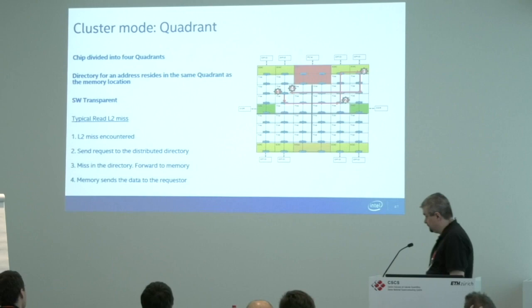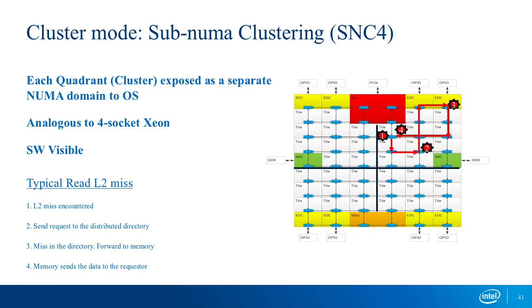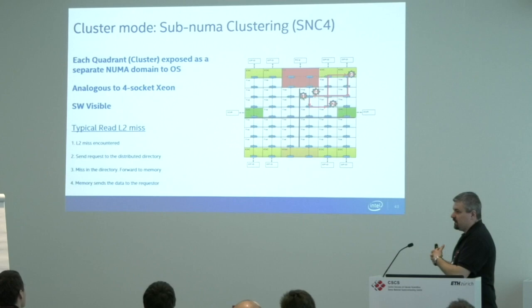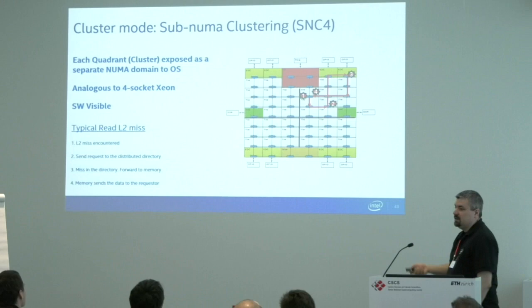Sub-NUMA clustering does the same as quadrant mode — we have four quadrants — but also exposes each quadrant as a separate NUMA node. In SNC4 you will see four NUMA domains with local and distant memory in the system's NUMA map. You can program against that: with MPI or NUMA-aware threading, you can use this to gain efficiency because you know which quadrant you're running in and can affinitize accordingly.